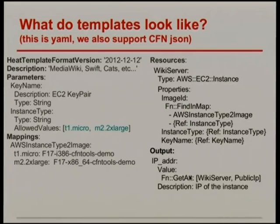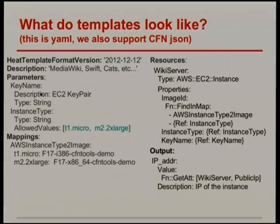The output section exposes particular properties of the different resource types — useful things like the URL of the web server you've just spawned, because it's going to be different every time due to a different IP address. Parameters are what the user passes in when invoking heat on the command line, and those can be validated.